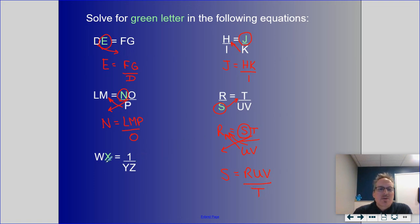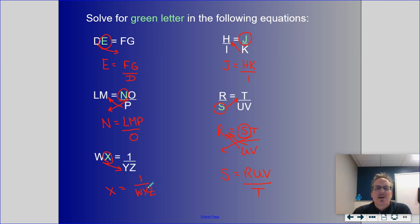Finally, solving for X: W is upstairs so when it crosses the equal sign it goes downstairs, giving X equals 1 over W times Y times Z — all three variables end up in the denominator. I hope you found this straightforward and are remembering this from previous math classes. We're going to use this skill every single day in chemistry. Thank you very much.